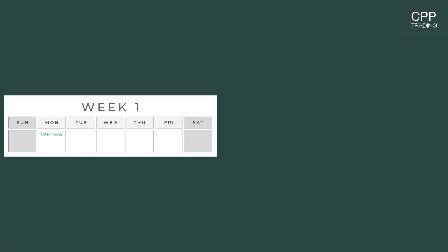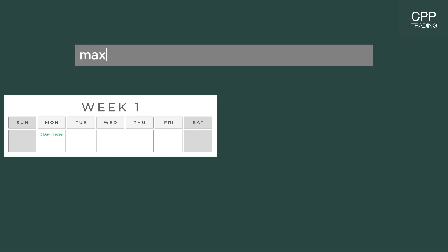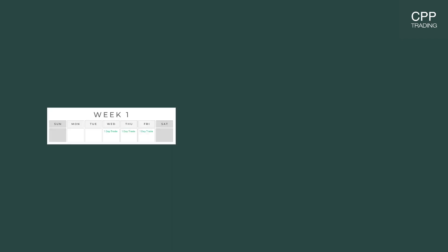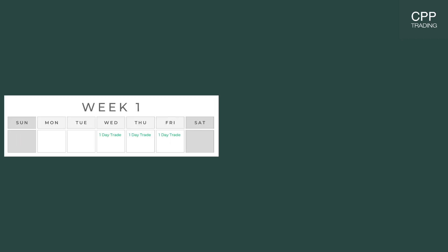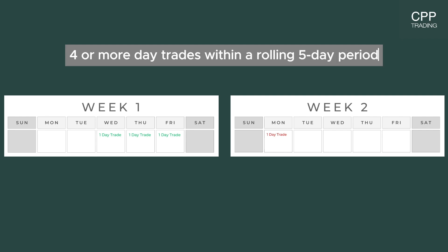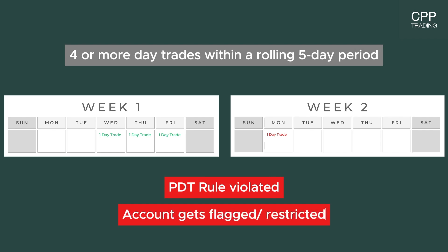For example, if you take 3 day trades on a Monday and then don't take any trades for the rest of the week, and then take another day trade the following week, you will be okay. But if you take a day trade on a Wednesday, one on a Thursday, one on a Friday, and then another trade the following Monday, you have violated the rule and your account gets flagged — because you didn't wait for those 5 days to pass and took more than 3 day trades within that 5-day period.